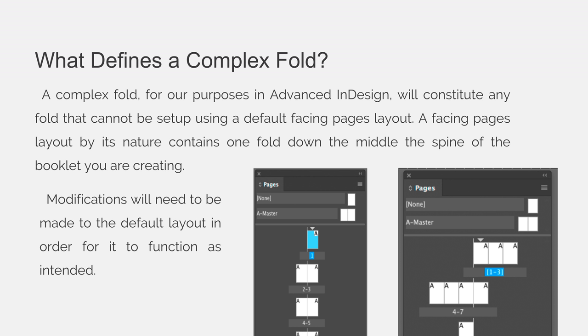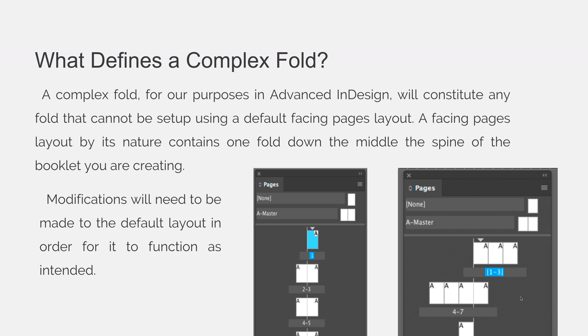Modifications will need to be made to the default layout in order for it to function as intended. In my first example on the left hand side here, this is a traditional book — it is not a complex fold. It has a right and a left hand side page. But if I do funky things to it, like in my second example here, this implies that I have additional pages that are folding out beyond the core or the center of the book. Anything that requires something like the second example, we're going to call that a complex fold.